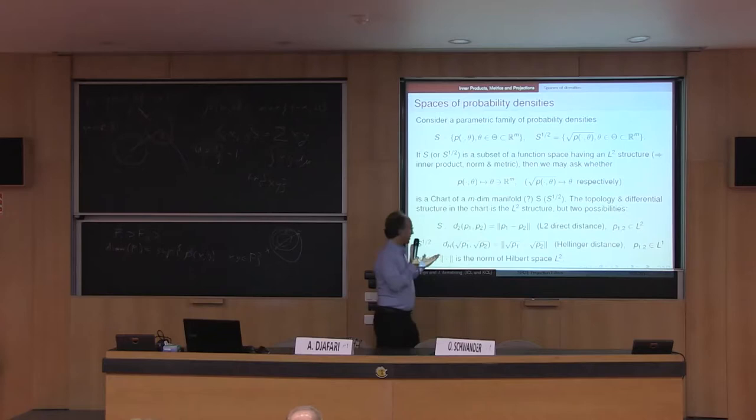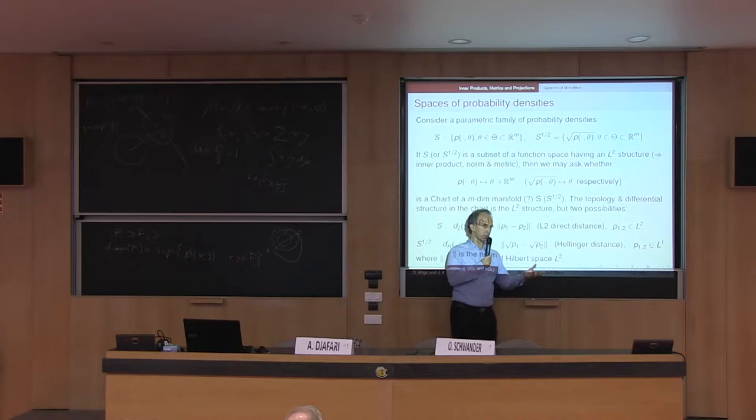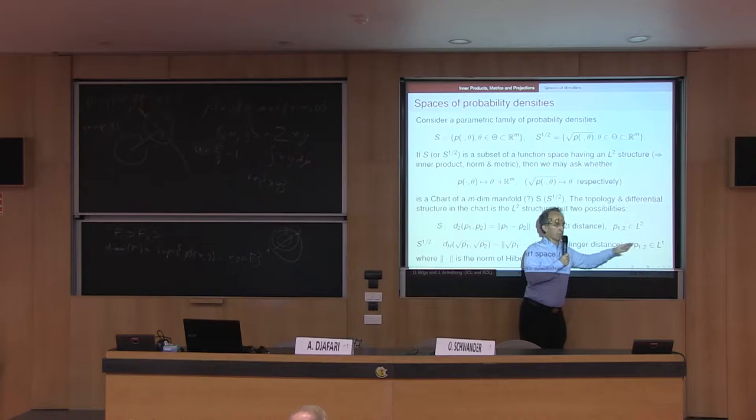On the other hand, if you work with the square root of densities, the distance is the L2 norm of the difference of the square roots, which is the familiar Hellinger distance. This reduces to the Fisher-Rao information metric in the finite dimensional family. For this to be computed, you only need the densities to be L1, which is clearly a more relaxed condition.